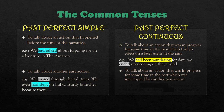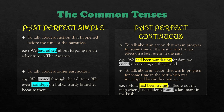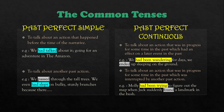We also use past perfect continuous to talk about an action that was in progress in the past which was interrupted by another past action — similar to past continuous. For example: 'Molly had been trying to figure out the map when Jack suddenly found a landmark in the bush.' — tengah fikir macam mana map tu, tiba-tiba Jack jumpa landmark.